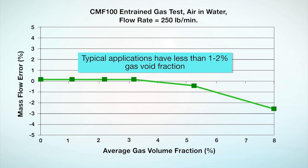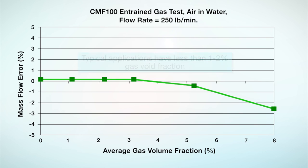Typical applications have less than one or two percent gas volume fraction. Laboratory data shows that for water at a flow rate of 250 pounds per minute, measurement performance of better than one percent is achieved with volume fractions of less than five percent.